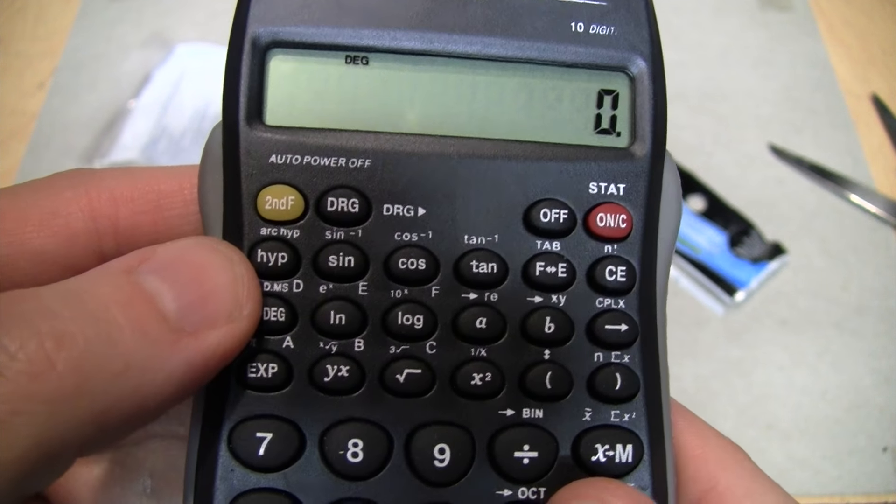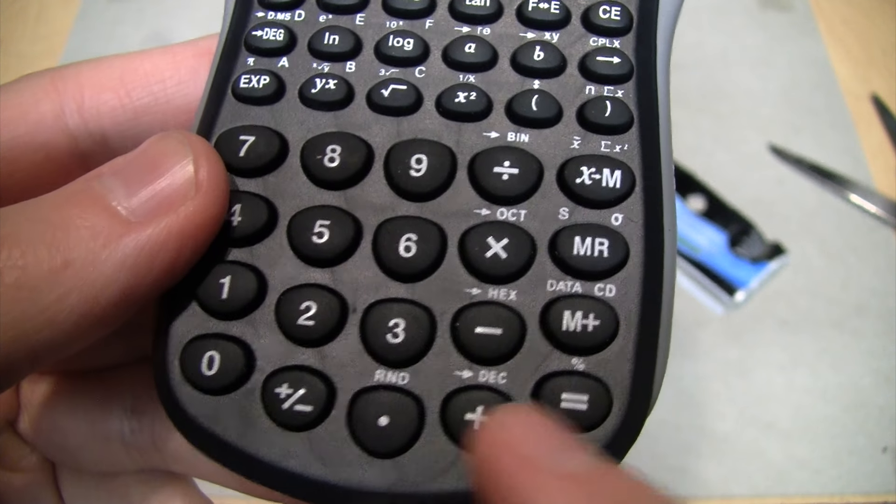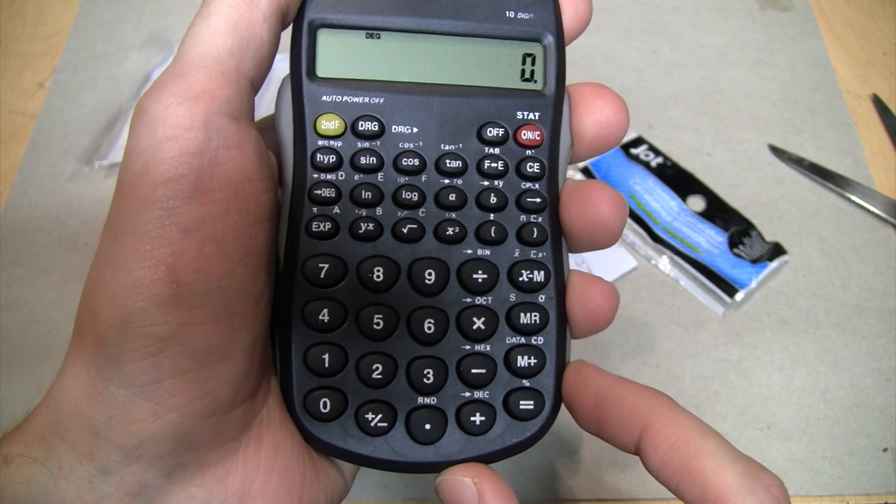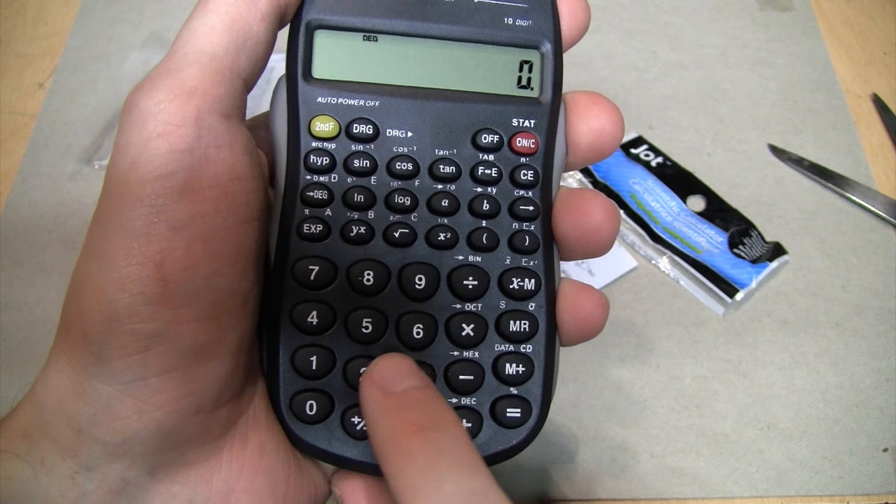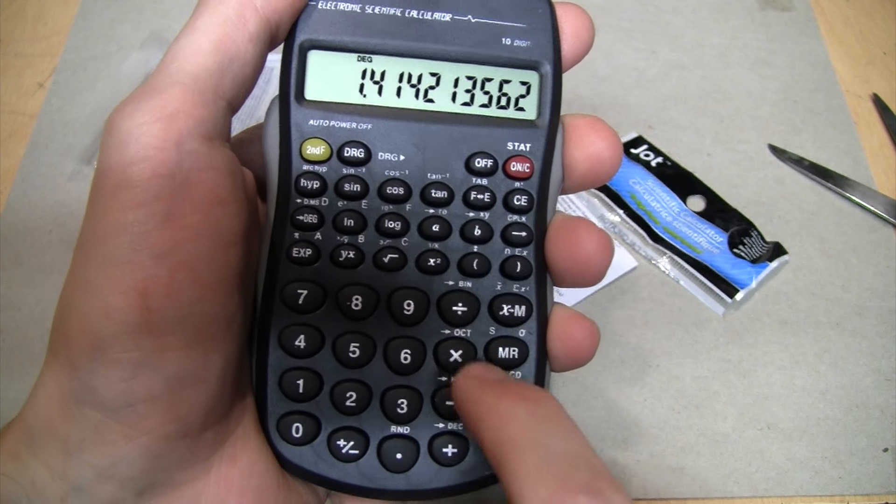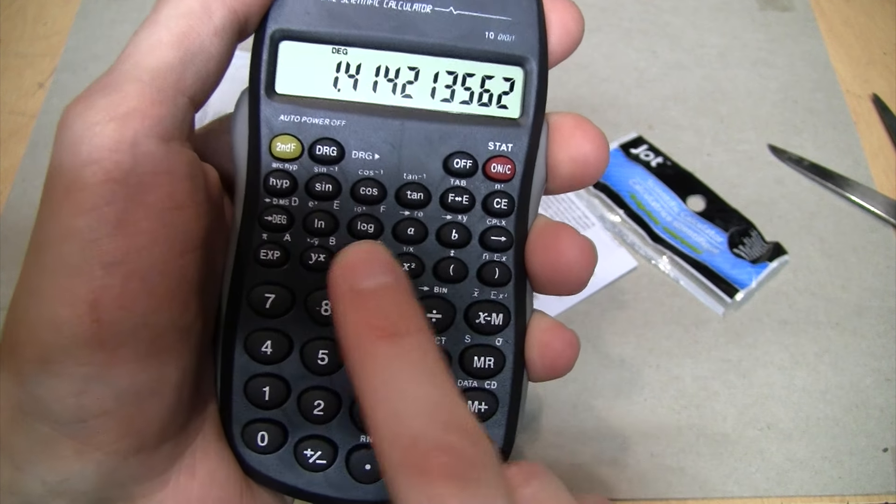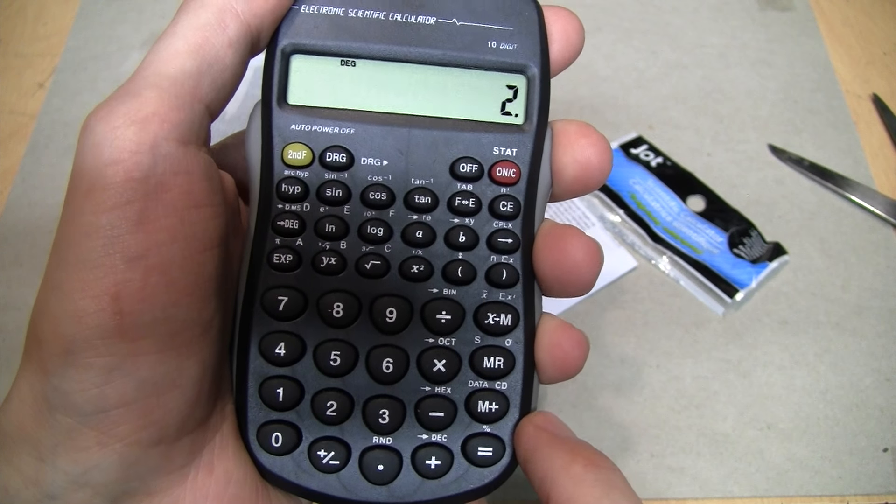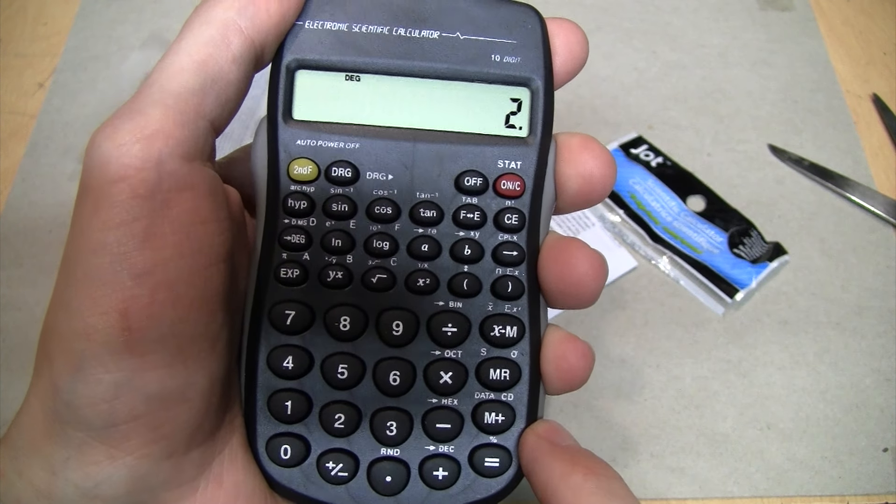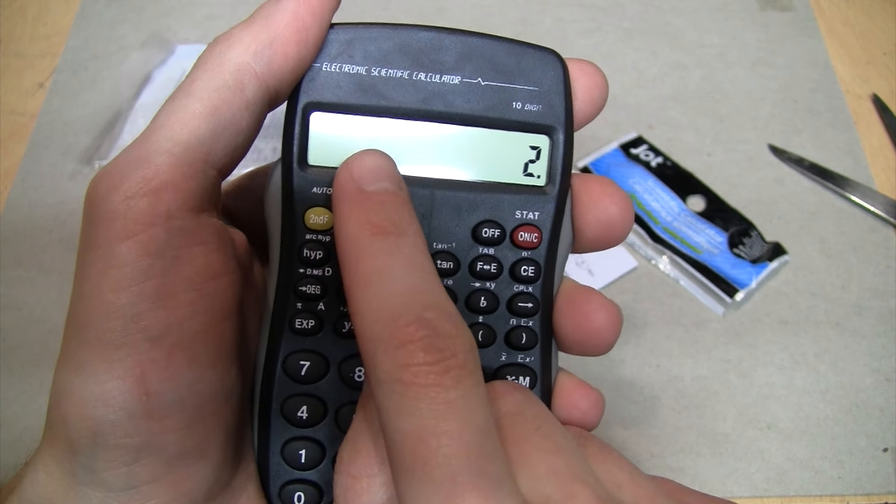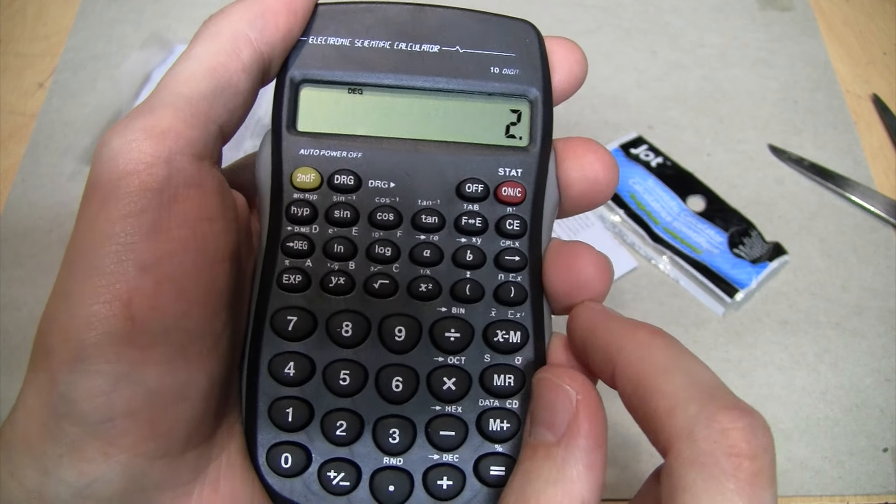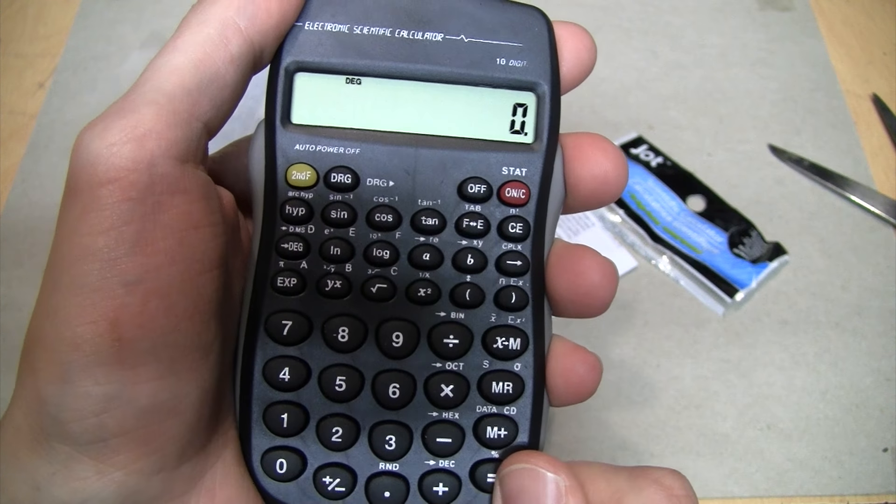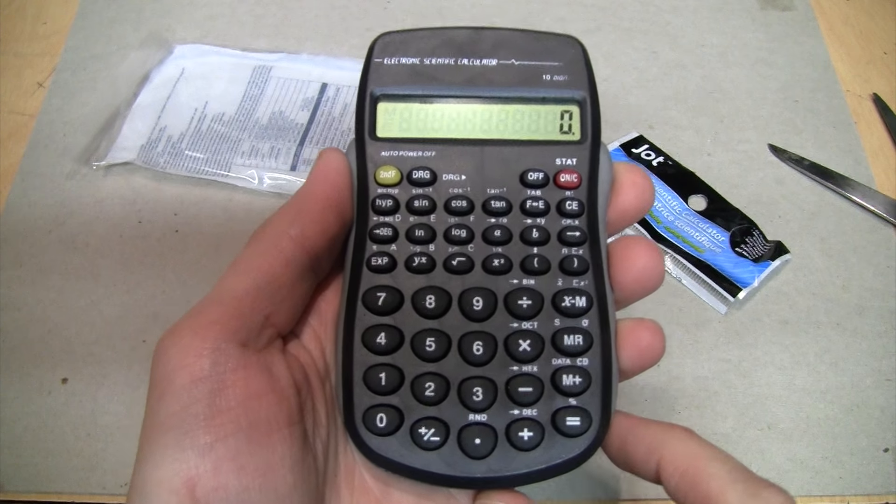Turn it on, you get degrees, radians, or grads. I still don't know what a grad is, never had a reason to use it. Typical functions like sine, cosine, tangent. Oh, you can do hex and octal and decimal, that's good. The first thing I typically do to test the accuracy of a calculator is to do the square root of two times the square root of two. The answer should obviously just be two.